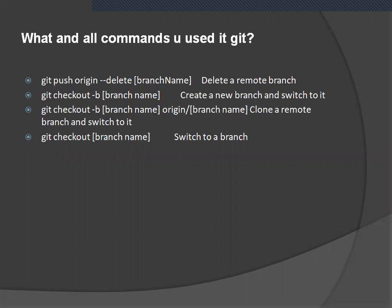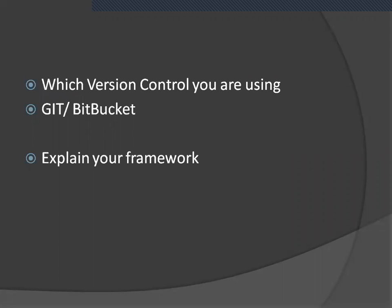You can also tell about the command used only for switching to a branch. Which version control are you using — this is a generic question and depends on the organization. You might be using Git, BitBucket, or TFS. You also need to explain your automation framework — whichever you are using — such as Page Object Model, data-driven framework, hybrid framework, or keyword-driven framework.